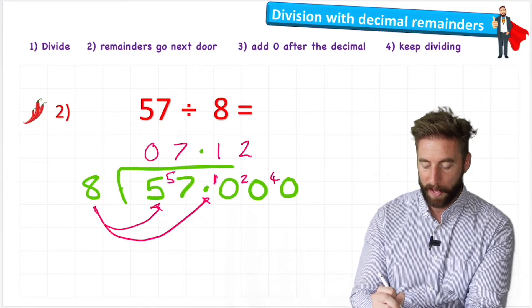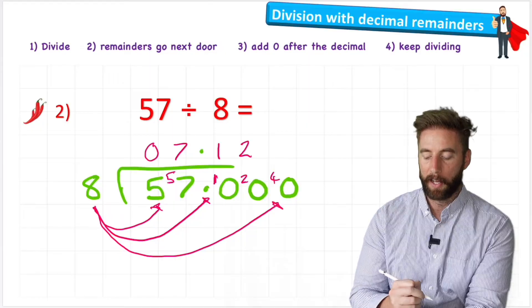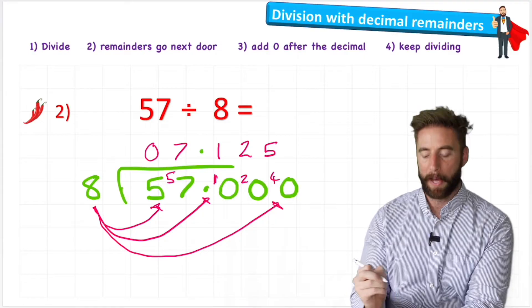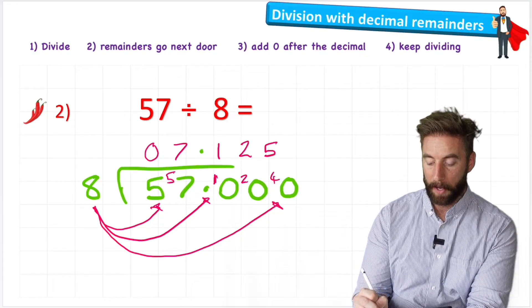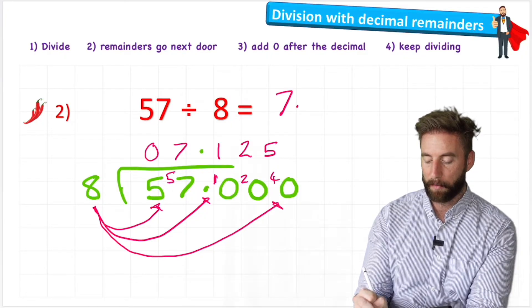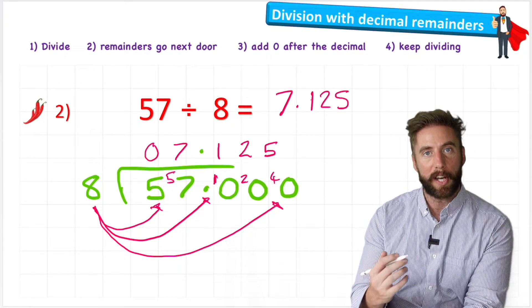How many eights are there in 40? There's a whole five. And there we go. I've managed to finish my answer. And my answer to 57 divided by eight is 7.125. And this answer has three decimal places.